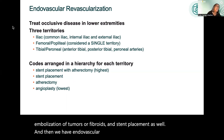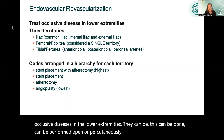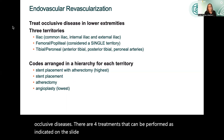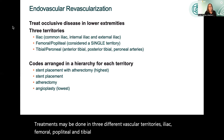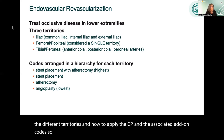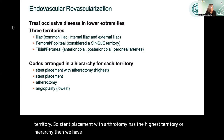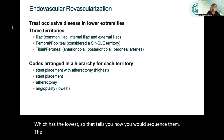Endovascular revascularization is used to treat occlusive diseases in the lower extremity, performed open or percutaneously. There are four treatments that can be performed, across three vascular territories: iliac, femoral-popliteal, and tibial-peroneal. Guidelines are extensive regarding the different territories and how to apply CPT codes and associated add-on codes. Codes are arranged in a hierarchy for each territory: stent placement with atherectomy has the highest hierarchy, then stent placement, then atherectomy, and then angioplasty, which has the lowest.